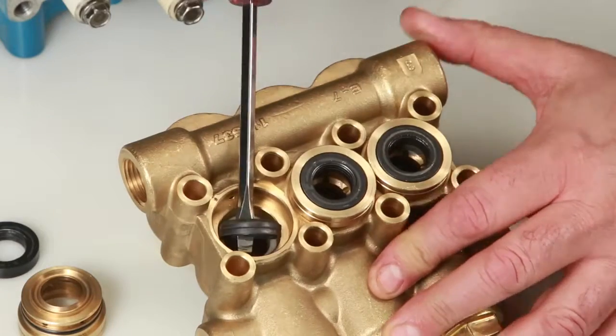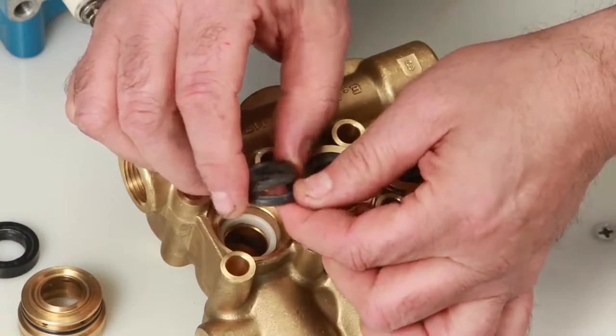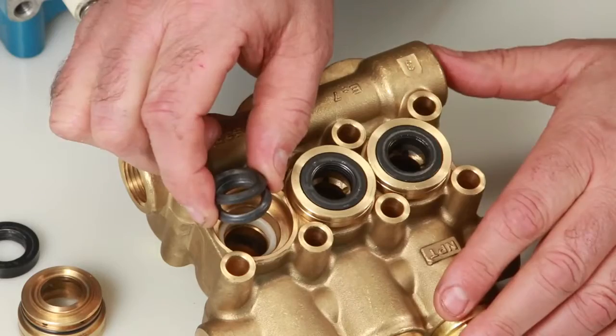Remove the V-packings with a screwdriver. There are two V-packings in each cylinder. Inspect for damage.